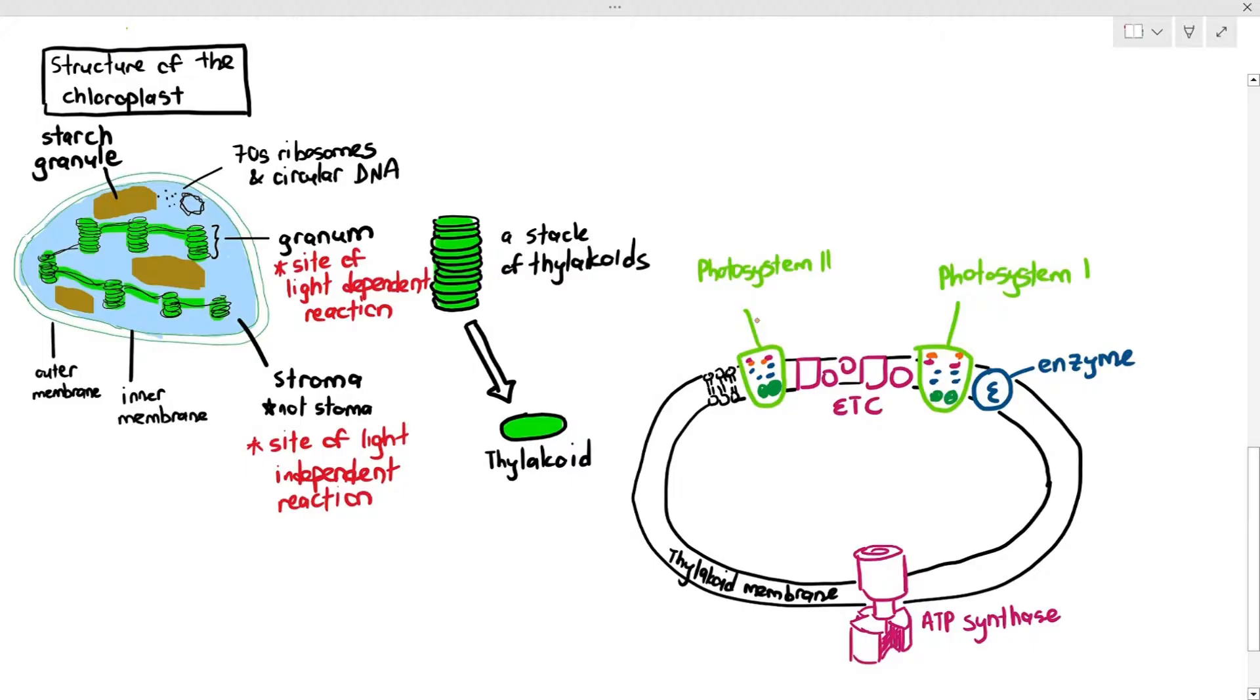So, this is what we first have to understand about the thylakoid. The thylakoid is this weird structure within the chloroplast. When you take the thylakoid and form it into a stack, they form something called granum and they carry out the light-dependent reaction.